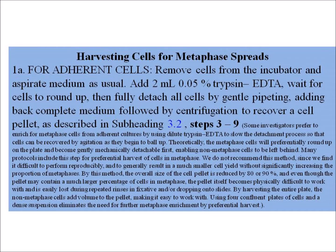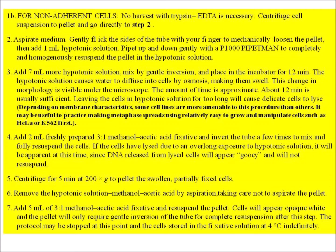For harvesting adherent cells for metaphase spread: remove cells from the incubator and aspirate medium. Add 2 ml of 0.05% trypsin-EDTA, wait for cells to round up, then fully detach all cells by gentle pipetting. Add back complete medium followed by centrifugation to recover the cell pellet. For non-adherent cells, the same method is used.